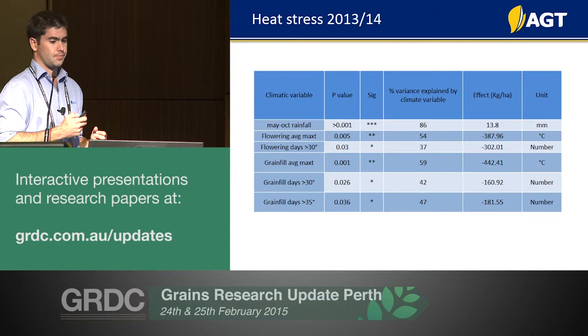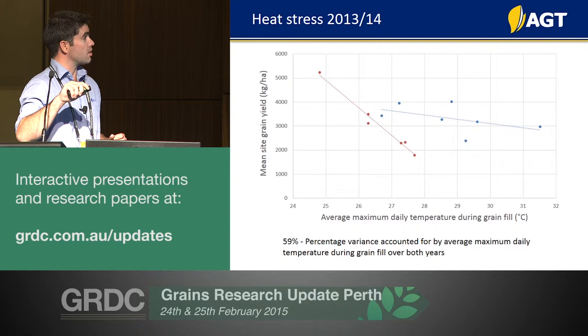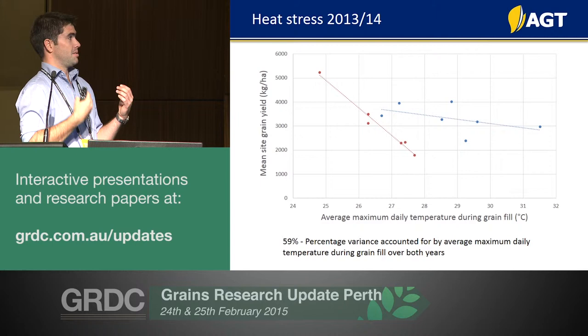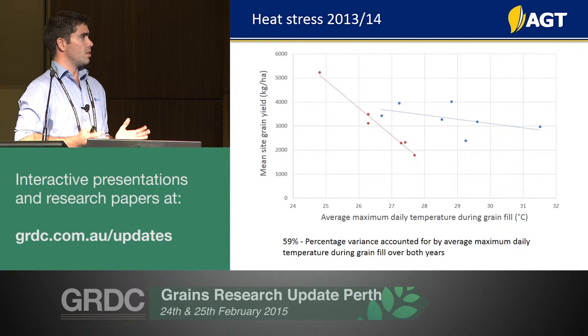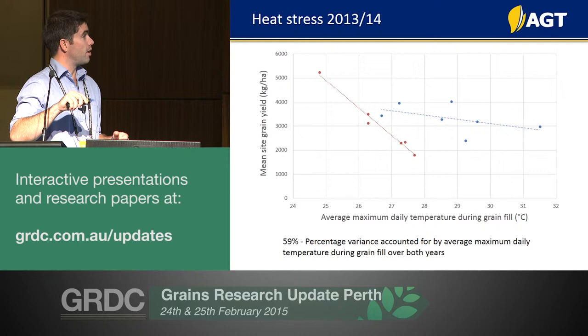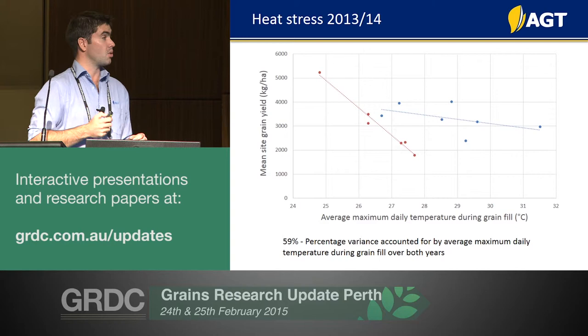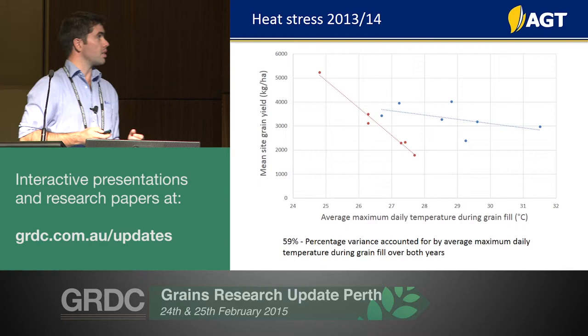Looking at 2013 and 2014 separately, the slopes in response to average maximum daily temperature during grain filling are very different between the two years. On average across both years, heat stress explained 59% of yield variation, but the responses year to year were significantly different — suggesting that acclimation and other interactions are occurring in the field. These are the interactions we're trying to understand further going forward.